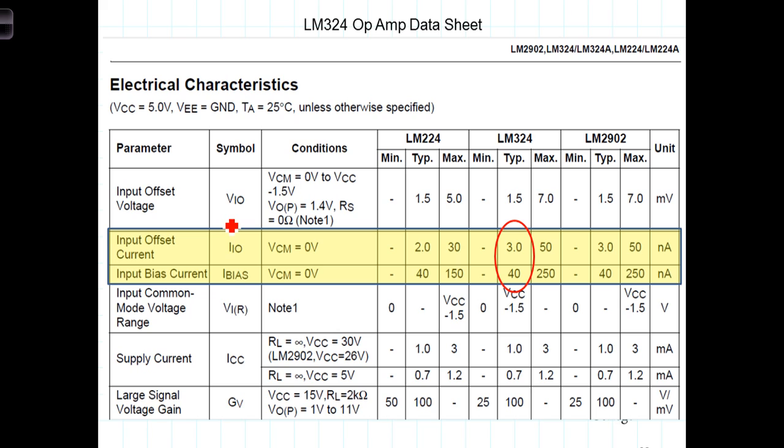This input offset current and the input bias currents are two quantities you'll find in the datasheet. The input offset current is the magnitude of IB1 minus IB2.